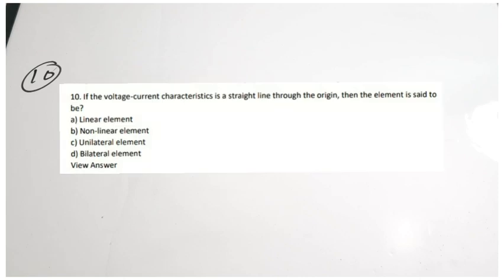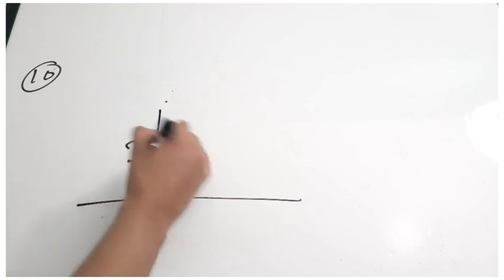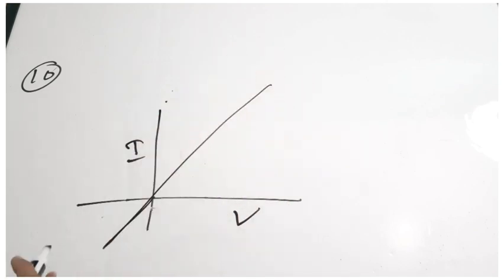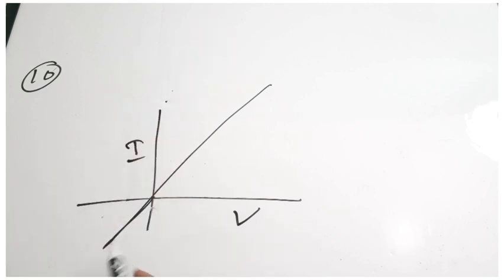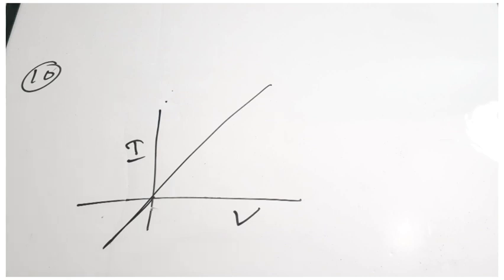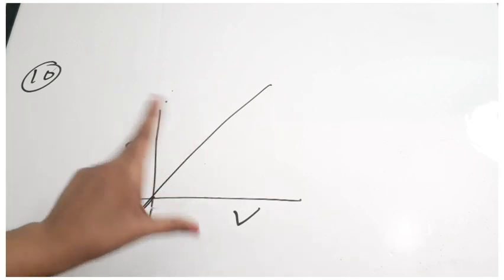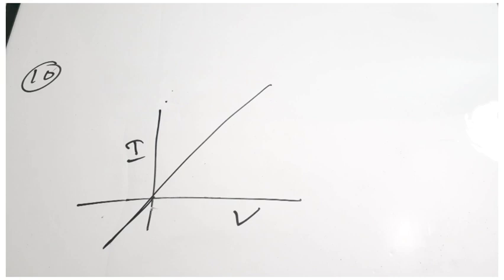Tenth question: if the voltage-current characteristic is a straight line through the origin, then the element is said to be dash. If you plot current vs voltage and get a straight line through the origin, there is a linear relationship between current and voltage, so the element is a linear element. Options non-linear, unilateral, and bilateral do not apply here. Correct answer is option A, linear.